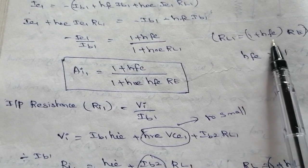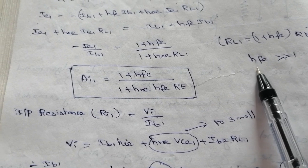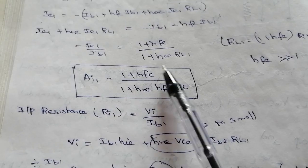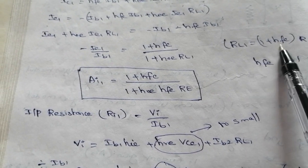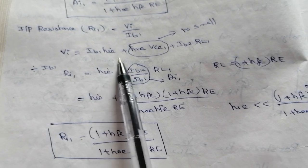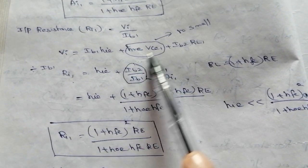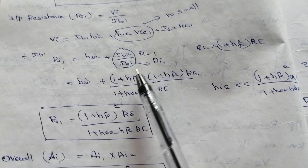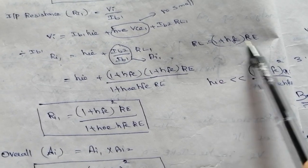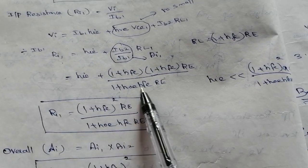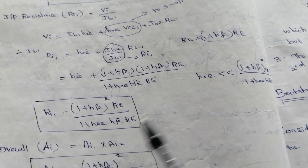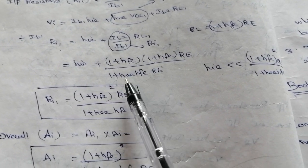Therefore IE1/IB1 equals (1 plus HFE) divided by (1 plus HOE·RL1), where RL1 equals (1 plus HFE)·RE. Since HFE is much greater than 1, we can neglect the 1, giving (1 plus HFE) divided by (1 plus HOE·HFE·RE). For the first stage input resistance RI1, applying KVL and dividing by IB1, with HIE much smaller than the other terms and neglected, RI1 equals (1 plus HFE) squared times RE divided by (1 plus HOE·HFE·RE).